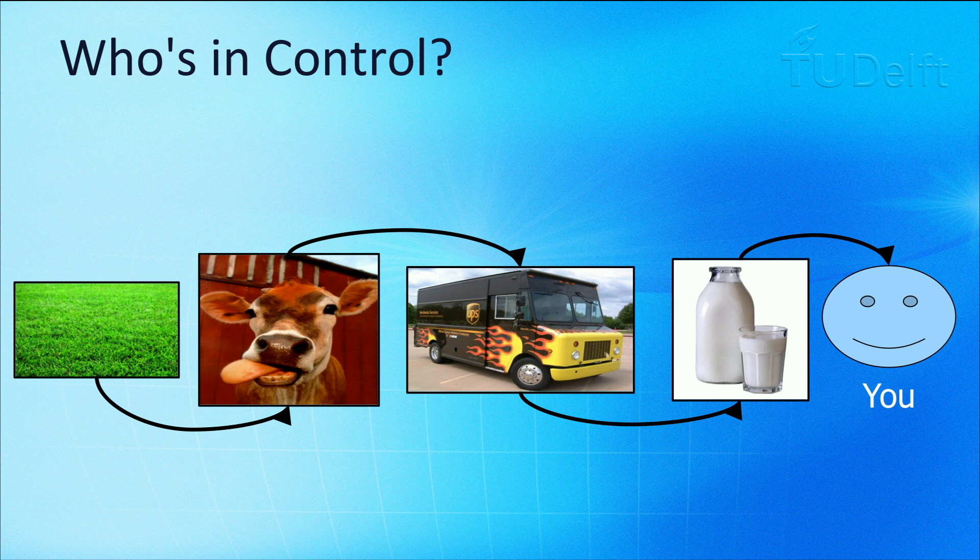The thing is, whenever you buy milk, you set off a chain of events. Your purchase is a vote that propagates throughout the system. You don't have to tell the delivery man how to package the bottles or how much to send. You don't have to tell the farmer when to milk the cows or how to feed them.